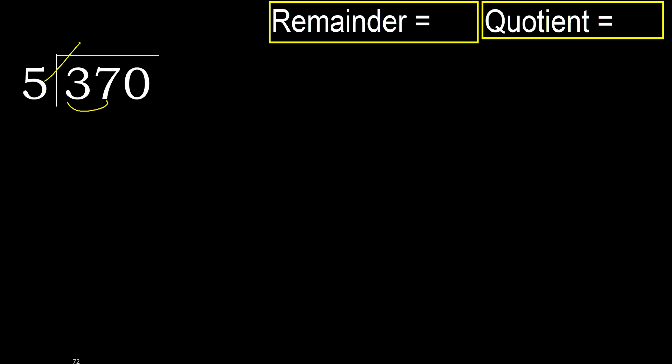5 multiplied by which number is nearest to 37 but not greater? 5 multiplied by 8 is 40 — 40 is greater. 5 multiplied by 7 is 35 — 35 is not greater, so subtract. Remainder: 20.